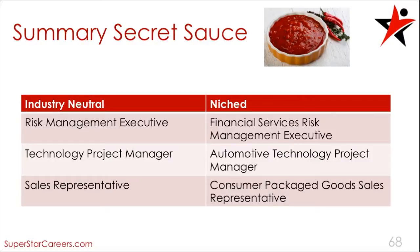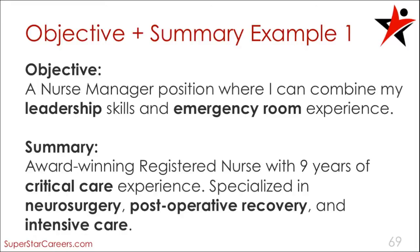Here's a tidbit of secret sauce for you. If you've developed a particular specialty, your summary title can reflect that niche. For example, if you're a risk management executive in the banking space and you want to continue in that vein, you can let potential employers know that your specialty is being a financial services risk management executive. If you work in the automotive industry as an IT project manager, you can describe yourself as an automotive technology project manager. If you have a history of selling in the CPG space, you can call yourself a consumer packaged goods sales representative. If you're changing careers, feel free to include both an objective and a summary on your resume — that helps people understand both where you've been and where you want to go next.